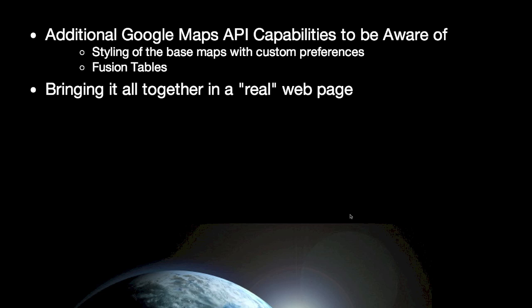This week we will be looking at some additional capabilities of the Google Maps API, viewing some online videos produced by the Google Maps team introducing two related concepts. One is a video about styling base maps with custom styles, and the other relates to the use of Google's Fusion Tables as an alternative data source for your Google Maps applications. Finally, I will do a quick overview of a complete Internet Mapping application based on the Google Maps API, more akin to a real-world scenario.